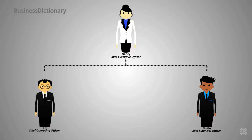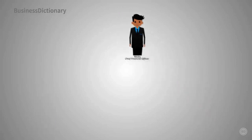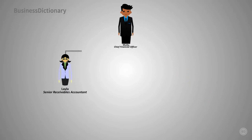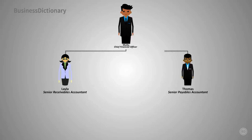Let's take a look at the financial department. Moodloo is the CFO and this is his team. Layla is a senior receivables accountant — she manages accounts receivables, the money coming in from customers, making sure invoices get issued and that Awesome Corp gets paid on time. Thomas is Layla's peer — they receive comparable compensation and both report to Moodloo. Thomas handles accounts payable, the money the company pays to its suppliers and service providers, and he also handles the company's taxes.